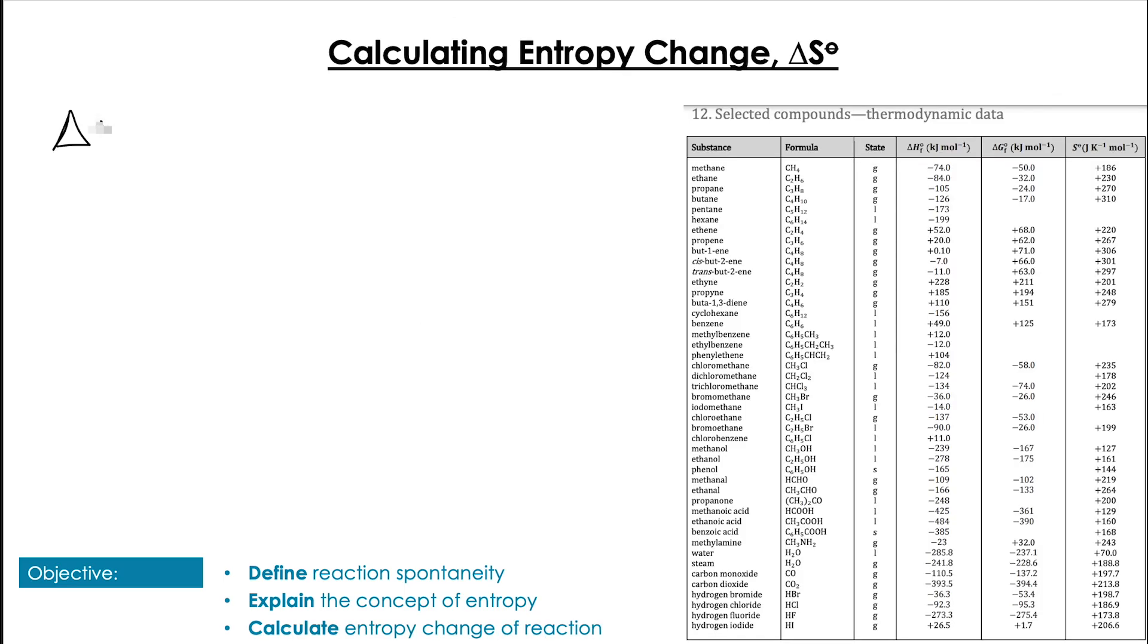Now we can actually quantify this change by looking at the standard entropy change by using the thermodynamic data that is on table 12 and the equation the entropy of the products minus the entropy of the reactants. So we use this column on the right hand side and we quite simply fill in the values for whatever reaction we have.